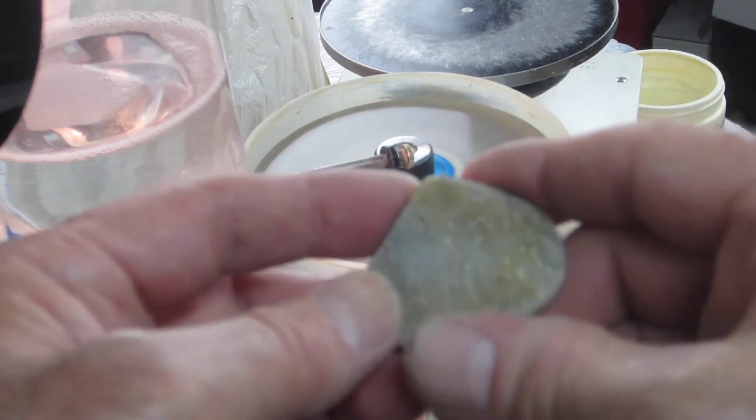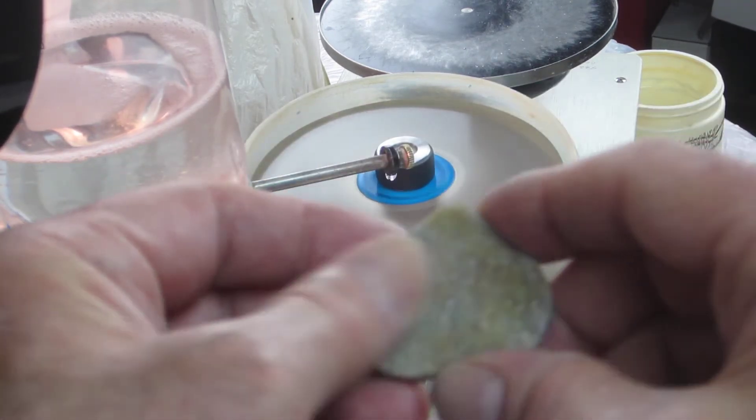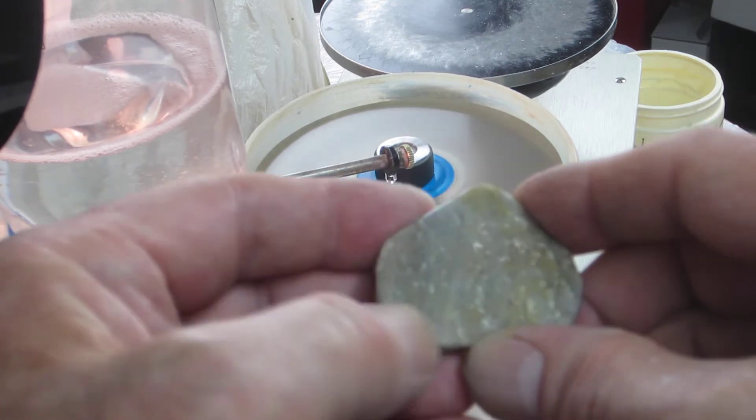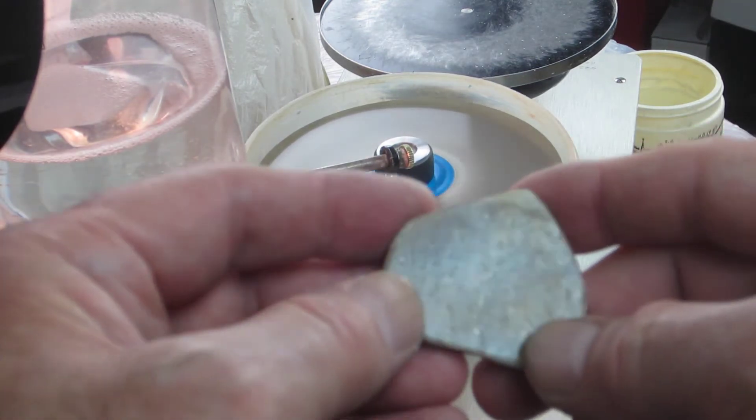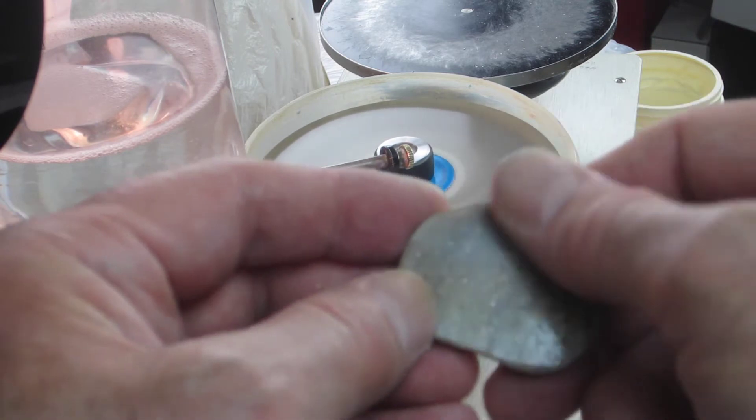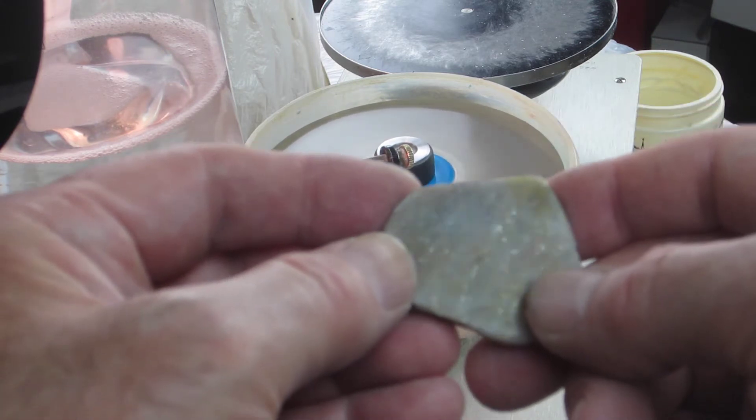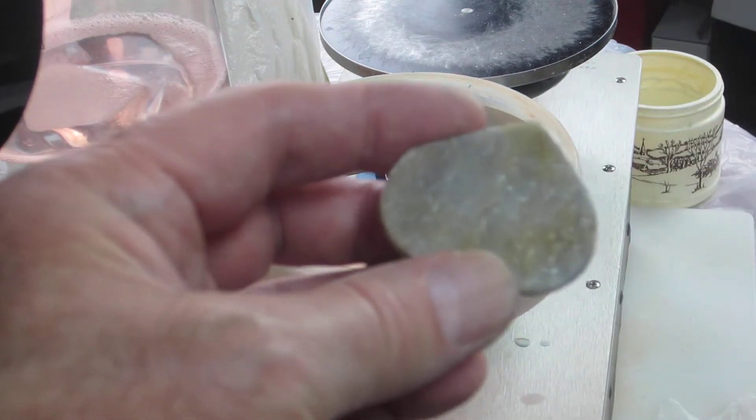And this white streak that's going across here. I'm trying to decide if I want to step it up to 1500 and 3000 before I polish it. And I probably will. So let me move on to those next steps. And I will get back with you.